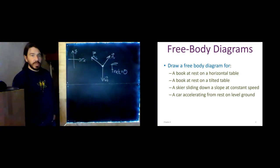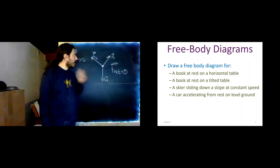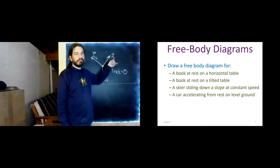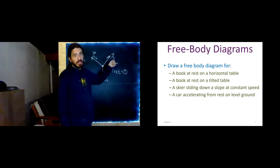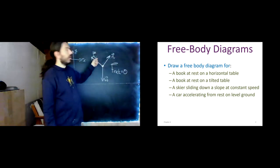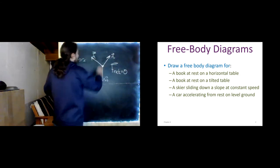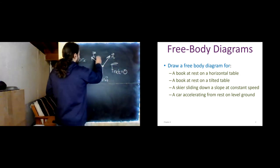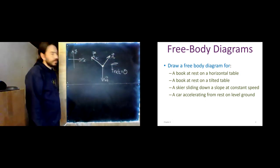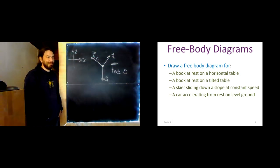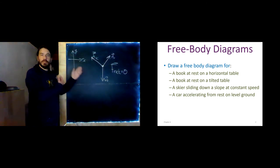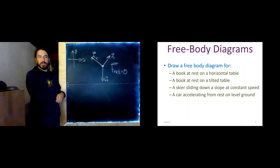Let's do a skier sliding down a slope at a constant speed. Let's see if I can't use some of the work I already did for this one. Does the skier still have weight? Does the skier still have a normal force? Is the normal force still perpendicular to the surface? That all looks pretty good. It's no longer static friction. If the skier is sliding, it's now kinetic friction. Still pointing up the hill. Constant speed. Fnet still zero. Behold. A skier sliding down a slope at a constant speed.